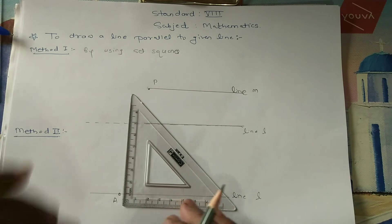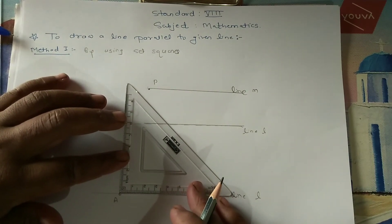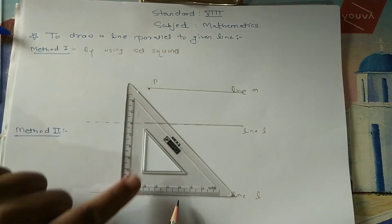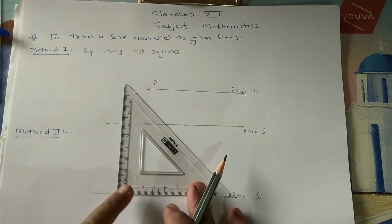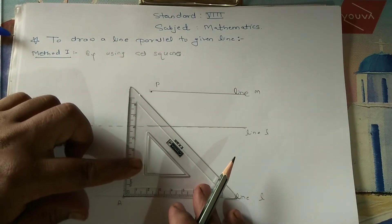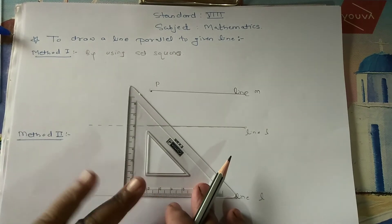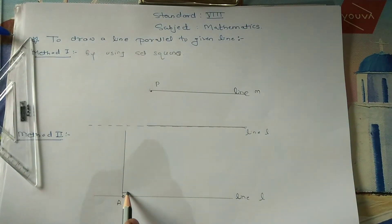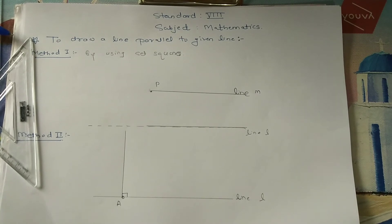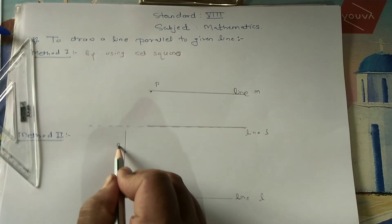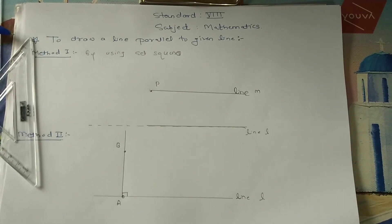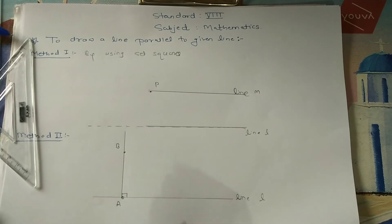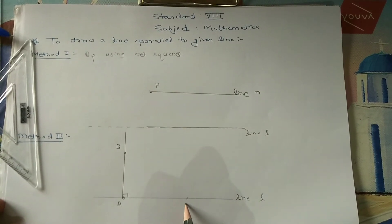We can also use the set squares for that. You have to keep this set square such that its base is matched with the given line. And then, through point A, draw a line which is perpendicular to the given line. This is the symbol of perpendicular, or 90 degrees. Suppose I consider somewhere a point B on this perpendicular. Then, you have to consider one more point on the given line — suppose this is point C.